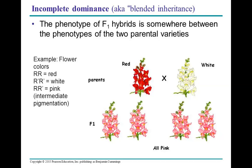This type of inheritance is known as incomplete dominance, also known as blended inheritance, where the phenotype of the parent generation gets combined and the offspring is a blend between the two. We record the genotypes using capital R capital R to represent red snapdragons, and R-prime R-prime to represent white. The resulting F1 generation from two homozygous parents results in an intermediate pigmentation quite different from either parent.